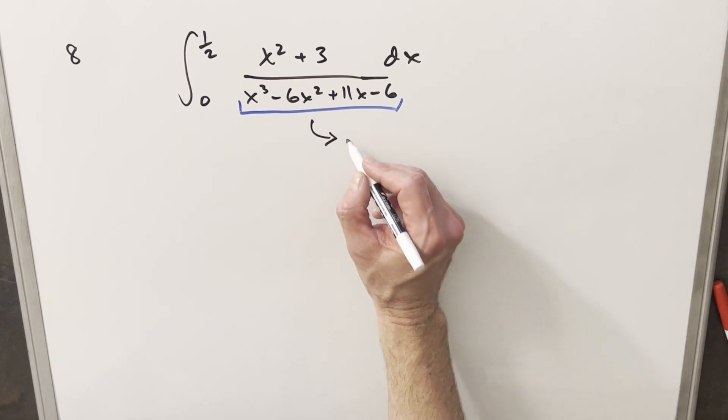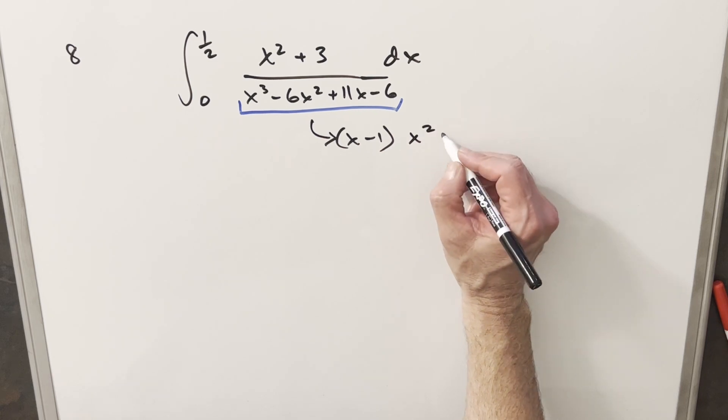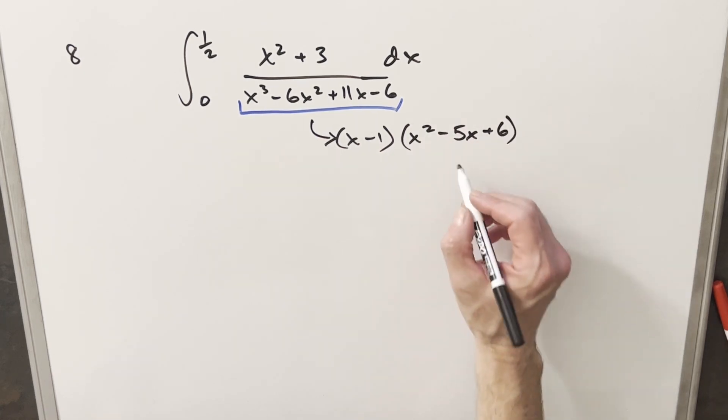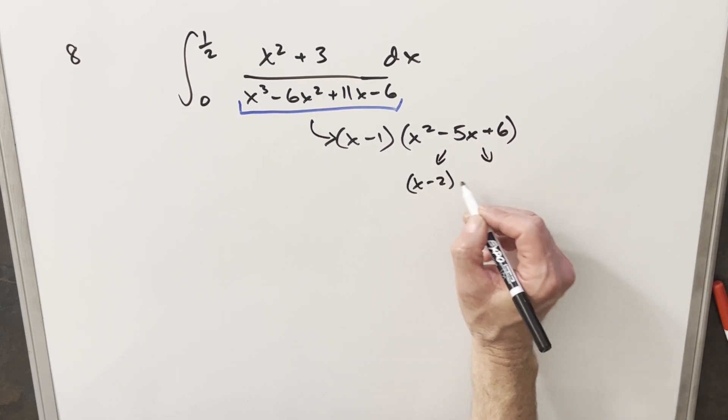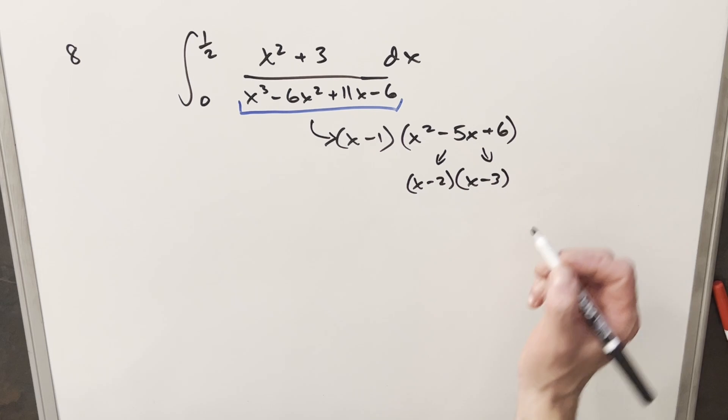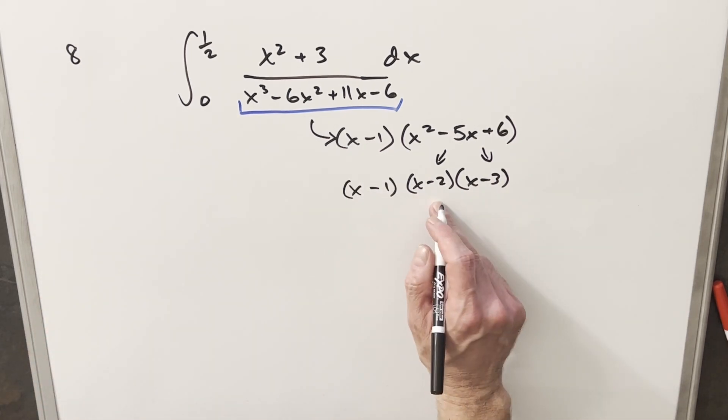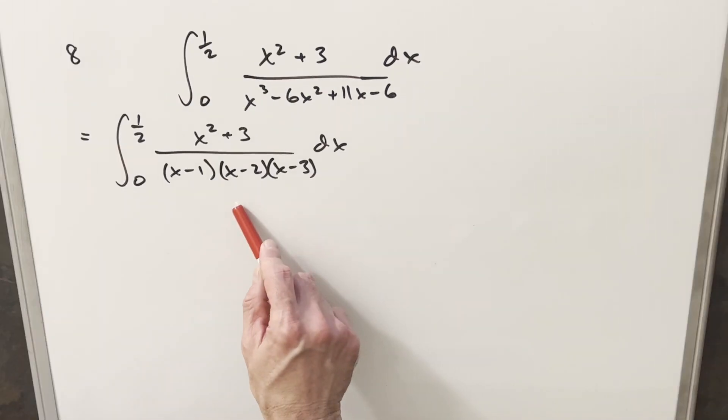So to start with, I can factor out an (x - 1) from this thing. And then by doing that, the other term is just going to be x² - 5x + 6. But this here is easily factorable as (x - 2)(x - 3). So it turns out that our denominator can just be written as (x - 1)(x - 2)(x - 3). So let's just rewrite this. And now that we have it rewritten in this form, we're in good shape to use partial fractions on this.